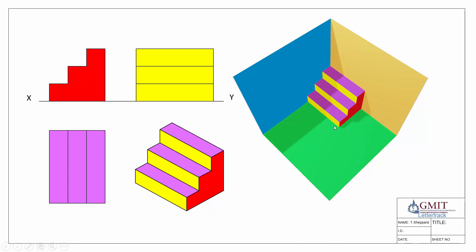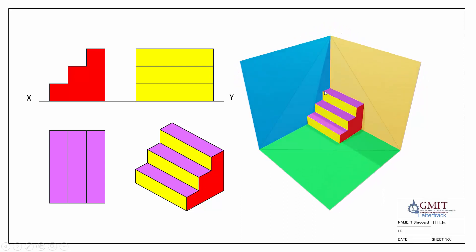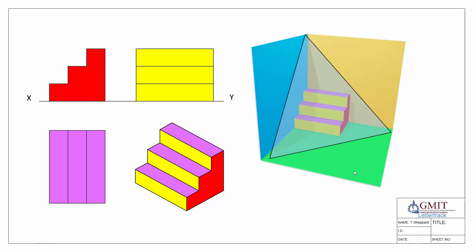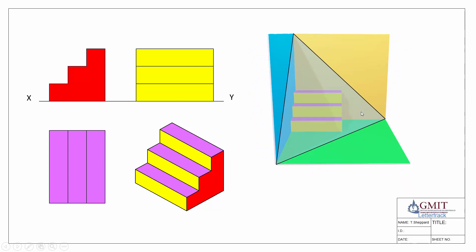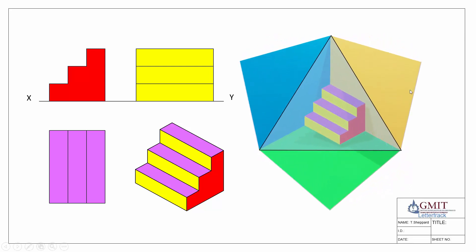In orthographic projection we have a viewing direction, an object, and a plane of reference to project onto. Those rules still hold true with axonometric projection — we need a plane to project onto. In this case it's a triangular plane tucked into the corner of our room, known as the axonometric plane. The important thing is that we're looking directly in at it, so it's always seen as a true shape. The basic idea is that we trace an image of the object onto this axonometric plane, giving us our 3D image.